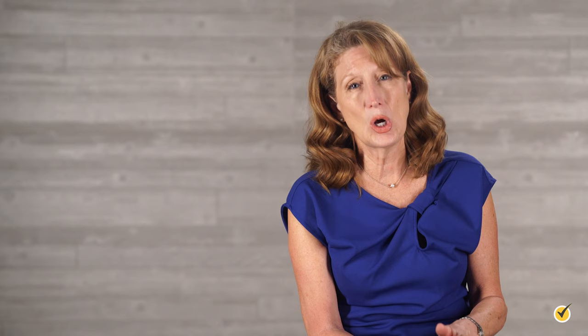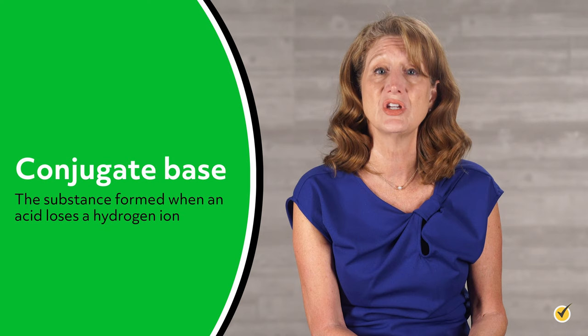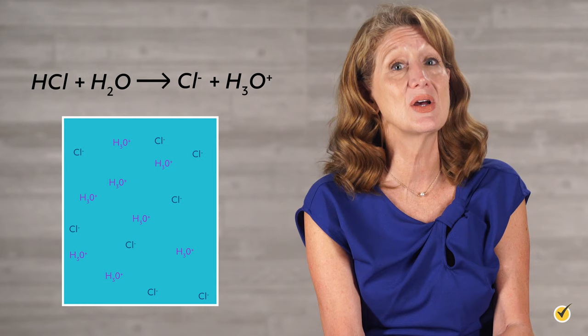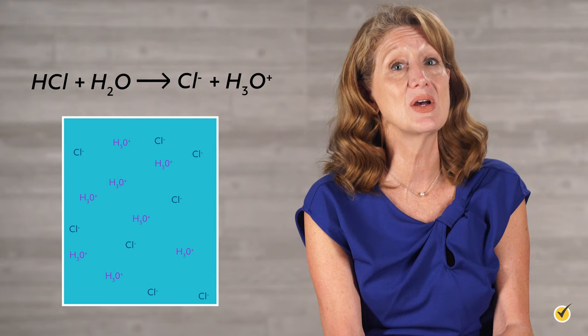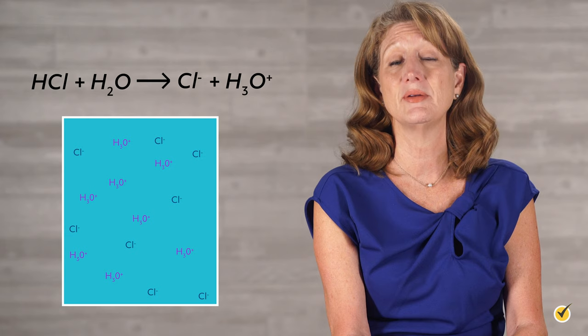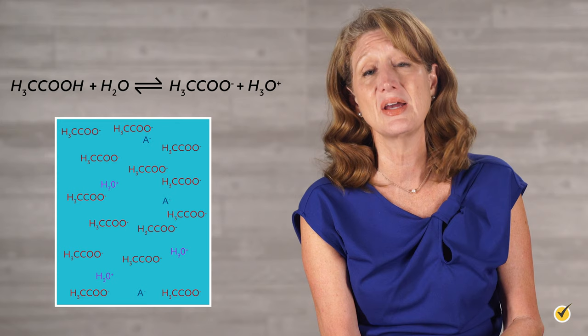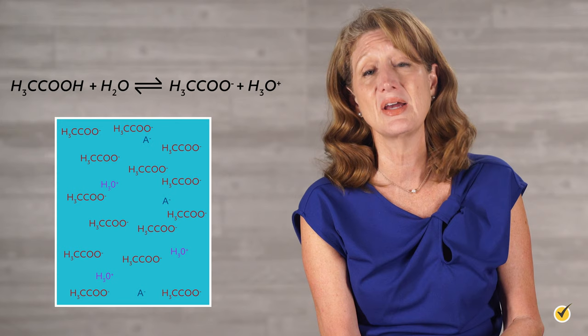The strength of an acid can also be assessed by the stability of its conjugate base. When the conjugate base does a good job of stabilizing the negative charge — meaning it has a lower energy — more acid will dissociate. For example, hydrochloric acid is a strong acid and completely dissociates into hydronium and chloride because chloride has a high electron affinity and gladly accepts the additional electron, doing a good job stabilizing the negative charge. In contrast, acetic acid is a weak acid and only partially dissociates because its conjugate base is not quite as capable of stabilizing a negative charge.